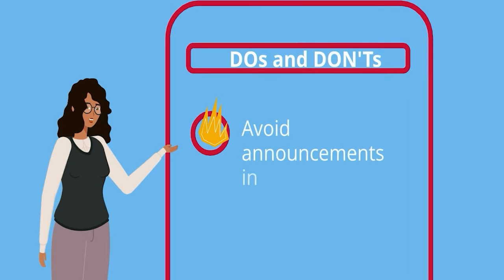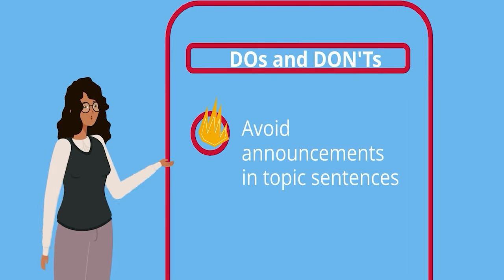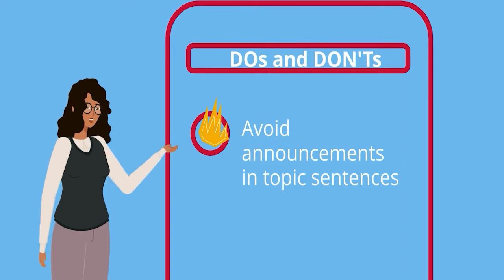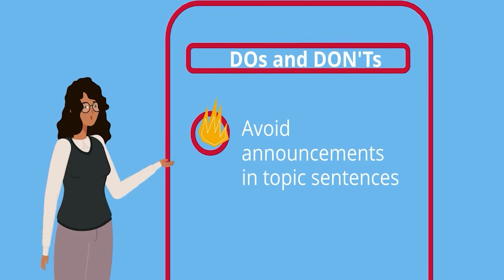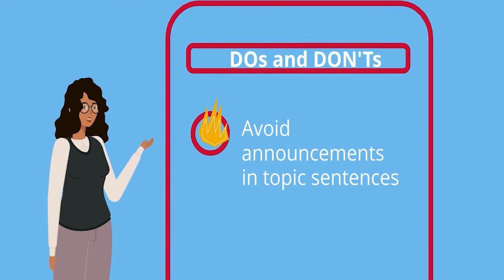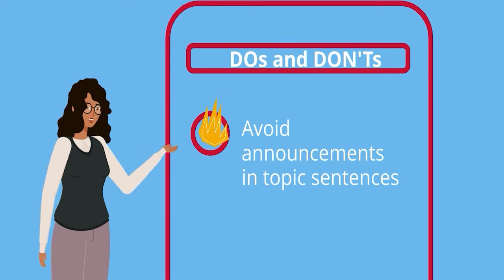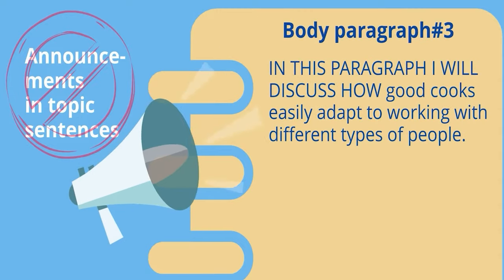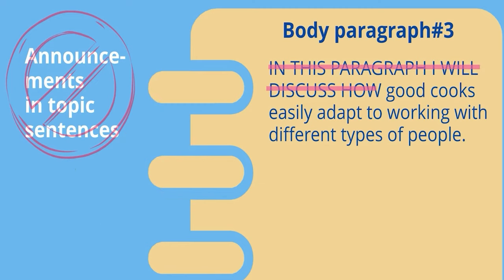Next, it's best to avoid announcements. Another common issue is declaring what the paragraph will be about rather than stating the topic and its relation to the thesis. For example, instead of 'in this paragraph, I will discuss how good cooks adapt easily to working with different types of people,' you can take out the announcement portion 'I will discuss how,' and you'd have a better topic sentence.